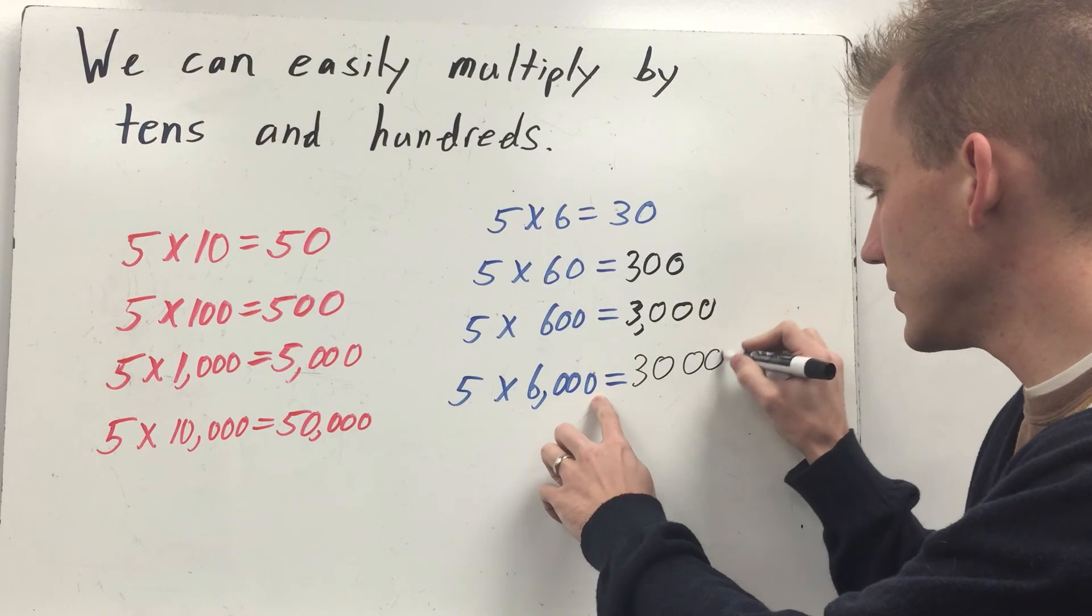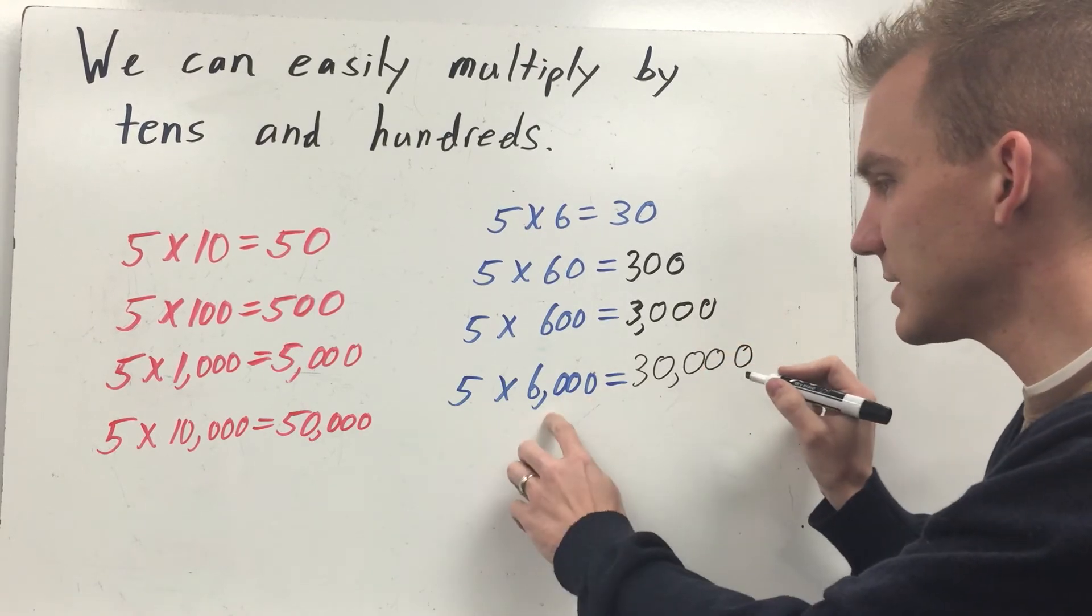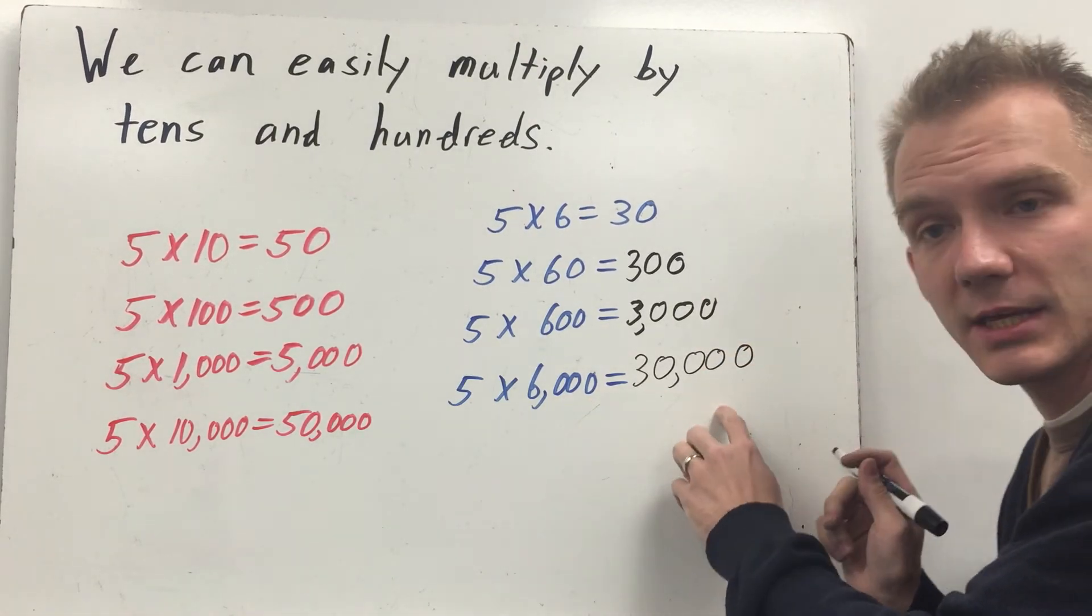Five times six is thirty. One, two, three zeros. One, two, three. So five times six thousand becomes thirty thousand.